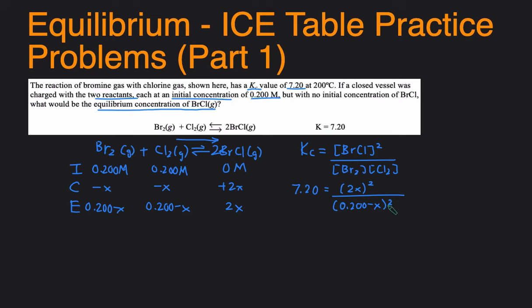Since it's squared on the top and on the bottom, we can make our calculation a little easier by taking the square root of both sides. And then when we do that, we get 2.68 equals 2X divided by 0.200 minus X. Then we can cross-multiply and we'll get 0.537 minus 2.68X equals 2X.